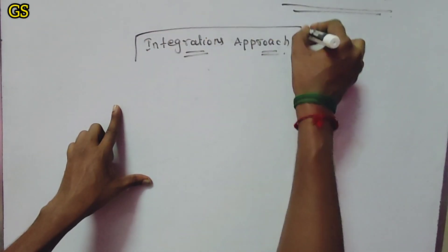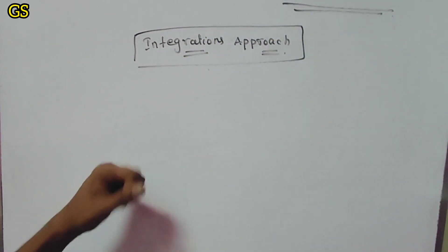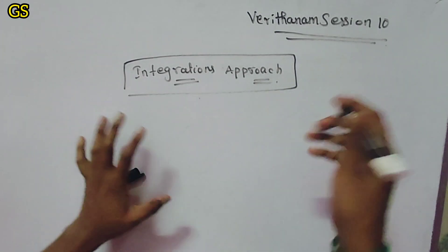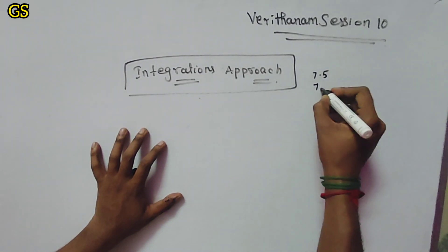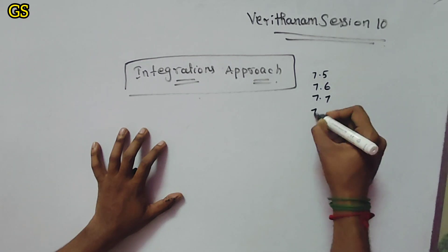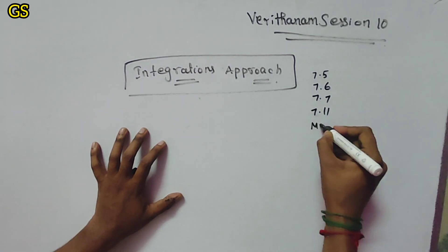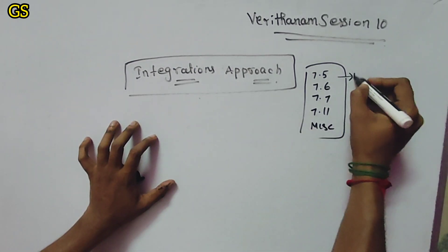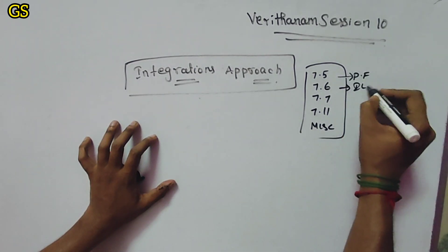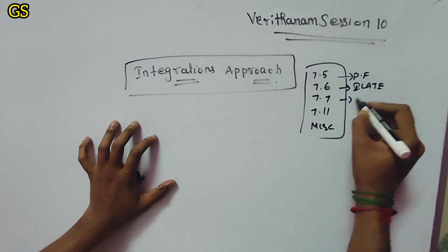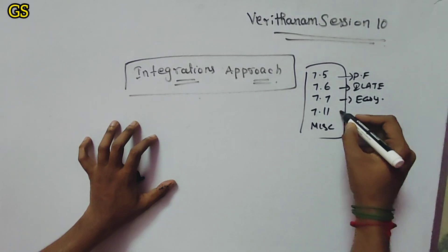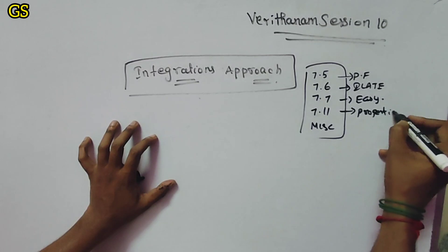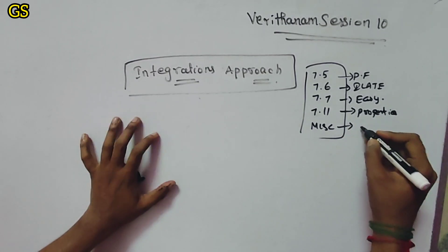Integrations — approach and approach. How do you think about integrations? The first thing is exercise importance: 7.5, 7.6, 7.7, 7.11 — that's miscellaneous. These are partial fractions. This is the highlight concept: integration by parts. This is a very easy concept. Next, the properties of integrals — definite integrals. This is very important.